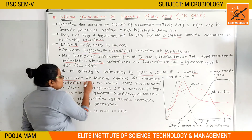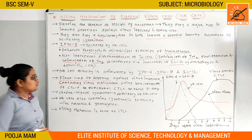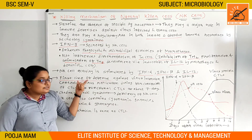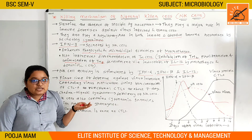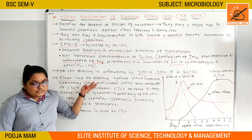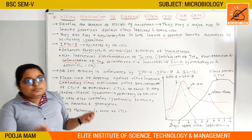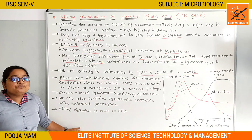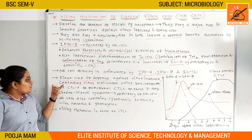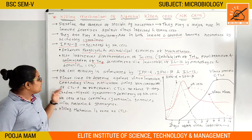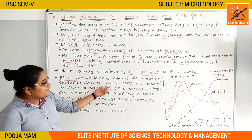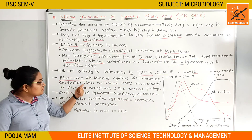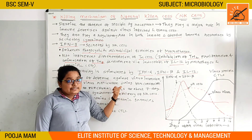Natural killer cells are the first line of defense against virus infection. Being part of innate immunity, they provide this first line of defense by controlling the virus replication during the conversion of cytotoxic T lymphocyte precursors to functional cytotoxic T lymphocytes.